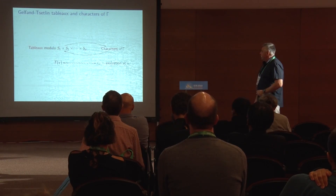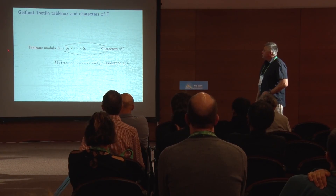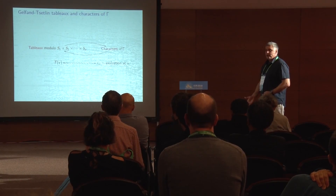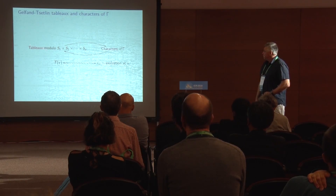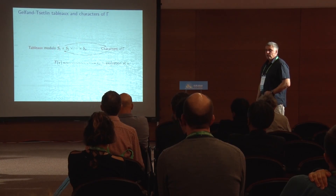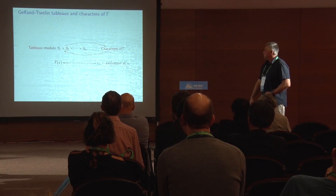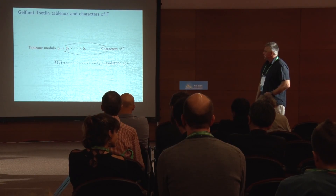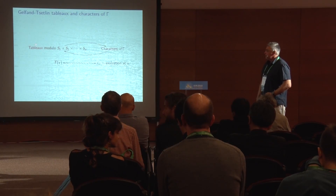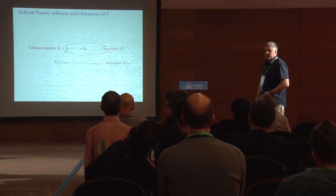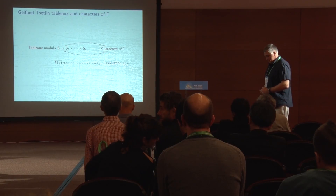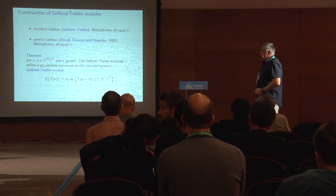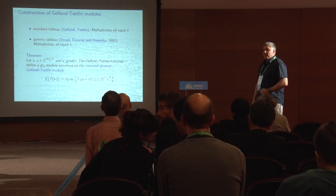The correspondence between tableaux and characters of the Gelfand-Tsetlin sub-algebra is as follows: a tableau modulo the action of the Galois group — where S_1 acts on the bottom row, S_2 on the second from below, and so on — corresponds to a fixed character of the Gelfand-Tsetlin sub-algebra.